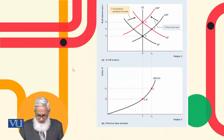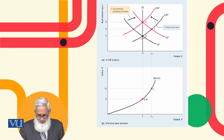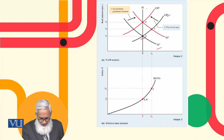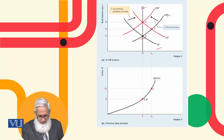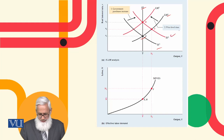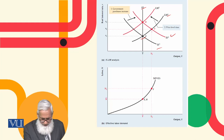Using graphs, we can understand this. Initially the economy is at point E, where the IS curve, LM1, and the FE line all intersect. An increase in government purchases will shift the IS curve to IS2. In the short run, the equilibrium will shift from E to F.